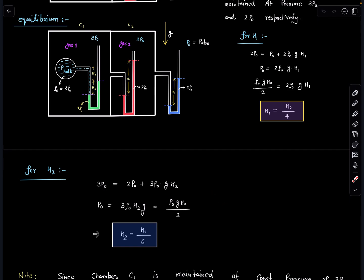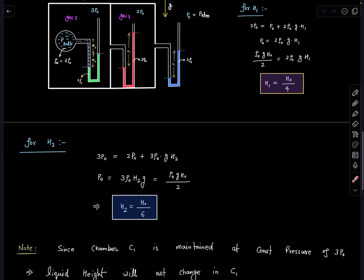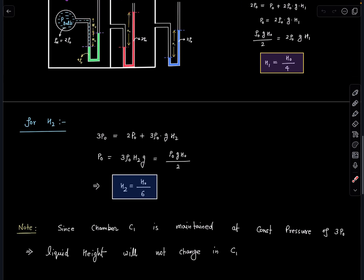So the new balancing height we have calculated. Now let's come to this part. Here earlier pressure is 3p naught and these outlet tubes were present. So now you can say that in chamber C1 is maintained at constant pressure of 3p naught, so the liquid height will not change in this arrangement.